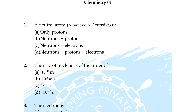Correct answer is option A: one and diamagnetic. Question number ten: in which of the following pairs of molecules or ions does the central atom have sp² hybridization? Correct answer is option A.